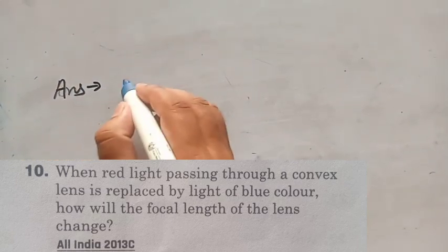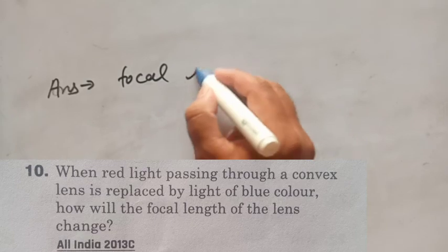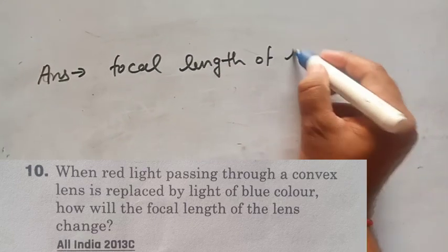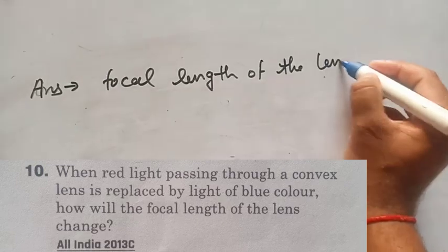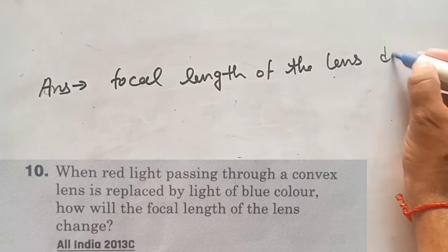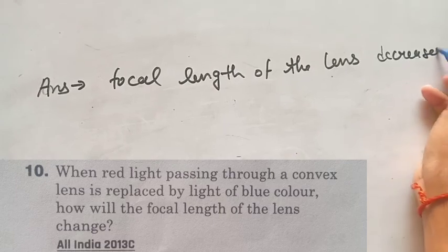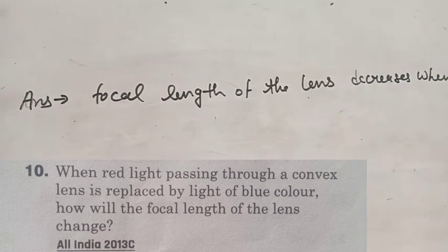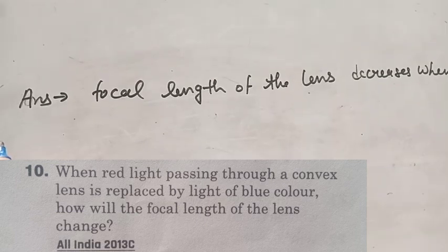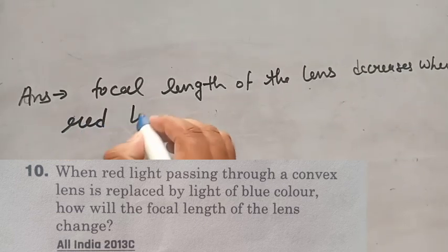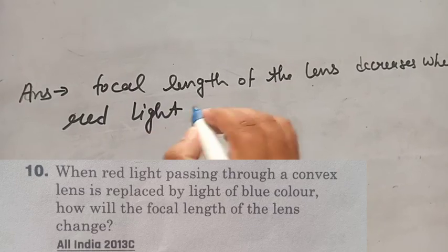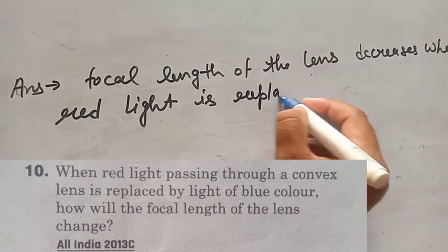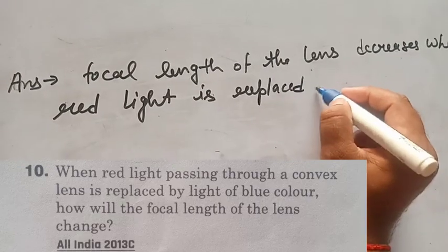Answer is: the focal length of the lens decreases when red light is replaced by blue light.